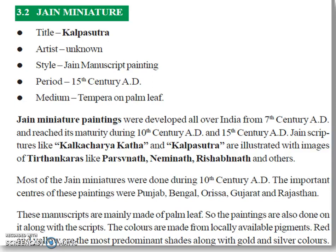The important centers of this painting were Punjab, Bengal, Orissa, Gujarat, and Rajasthan. These manuscripts are mainly made of palm leaves, so the paintings are also done on them along with the scripts.